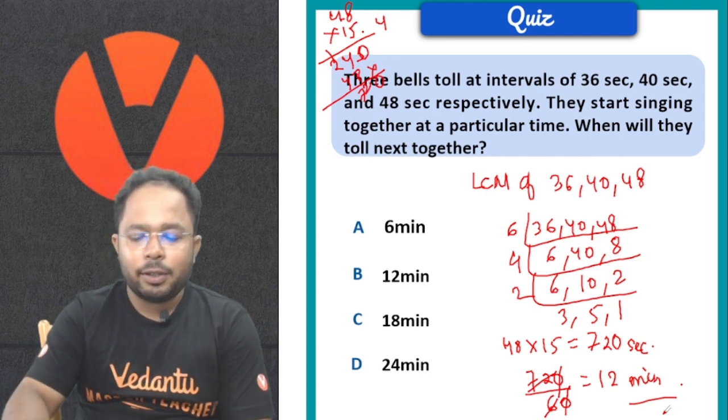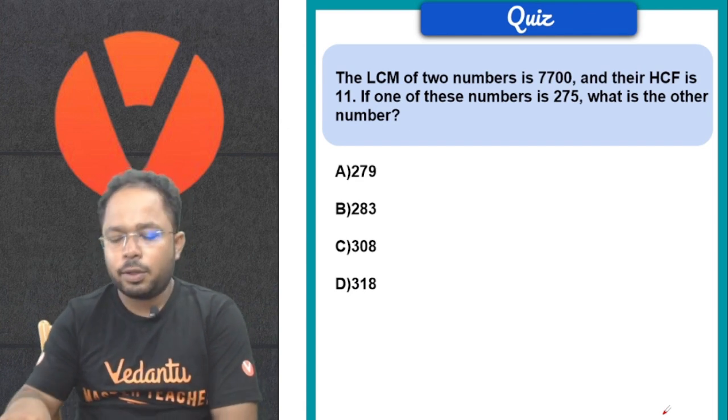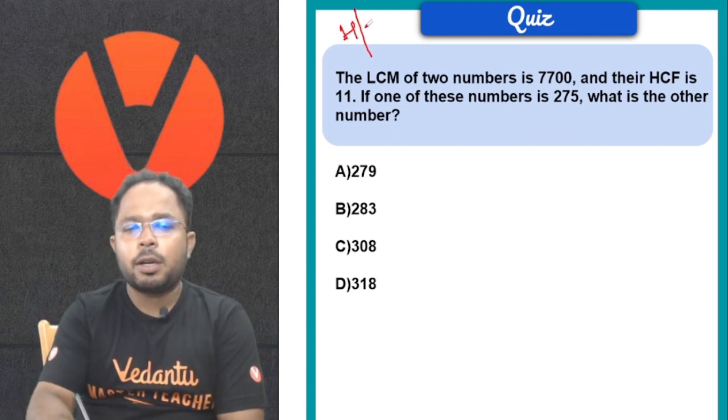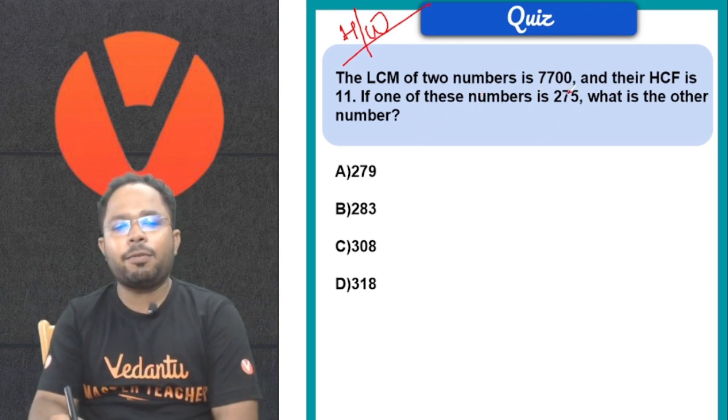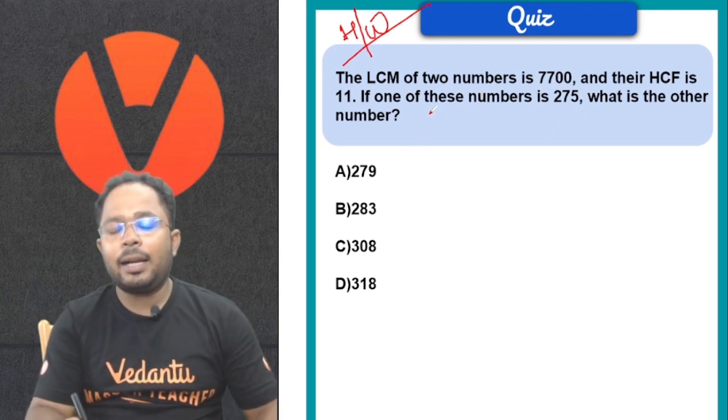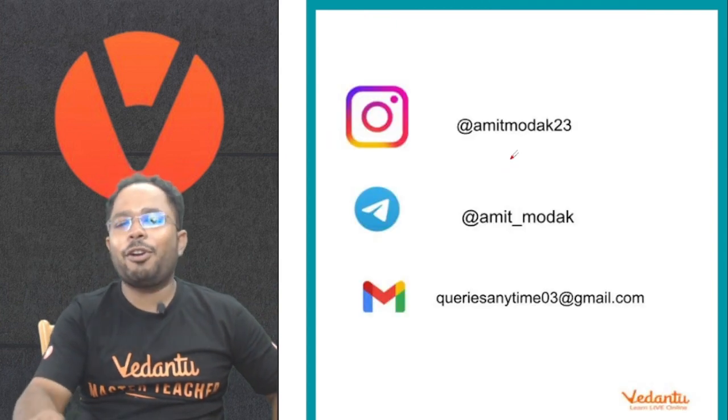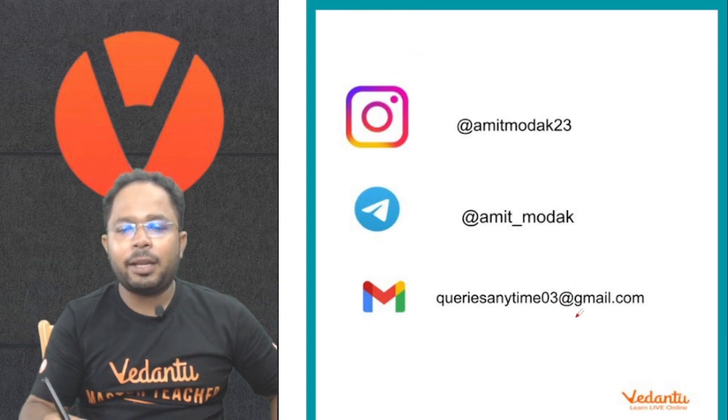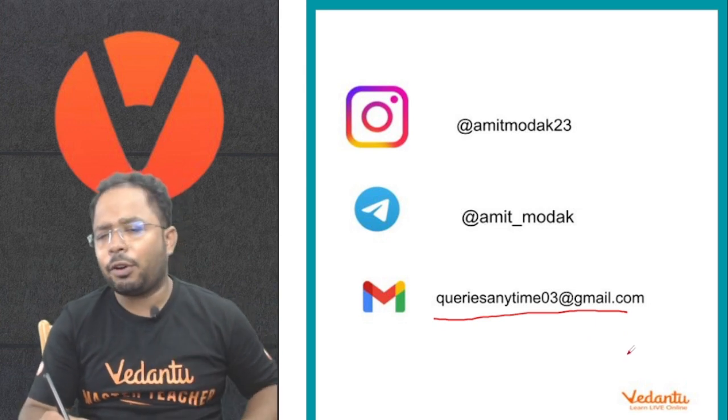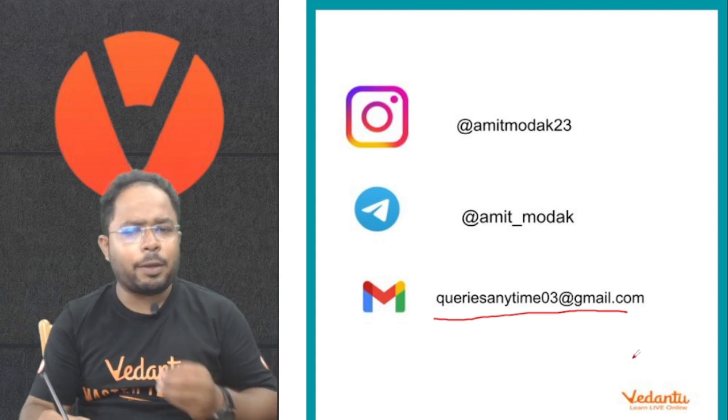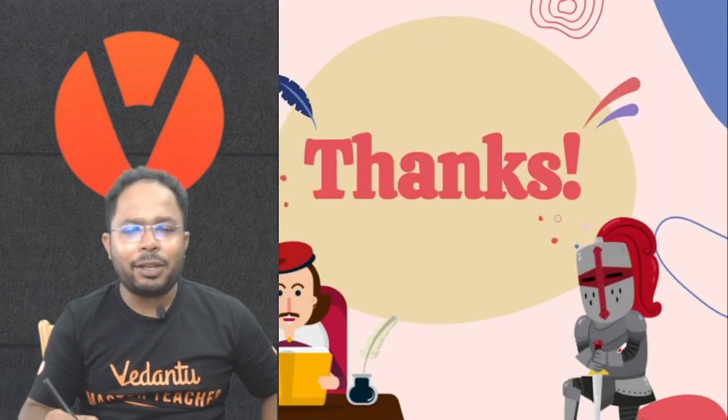This is your homework: What is the other number if the LCM of two numbers and HCF is given, and one number is 275? Students, you can follow me on Instagram, Telegram, and post your queries anytime at queriesanytime03@gmail.com. You can also ask for any topic which you want more questions on. See you in the next video. Thank you, bye bye.